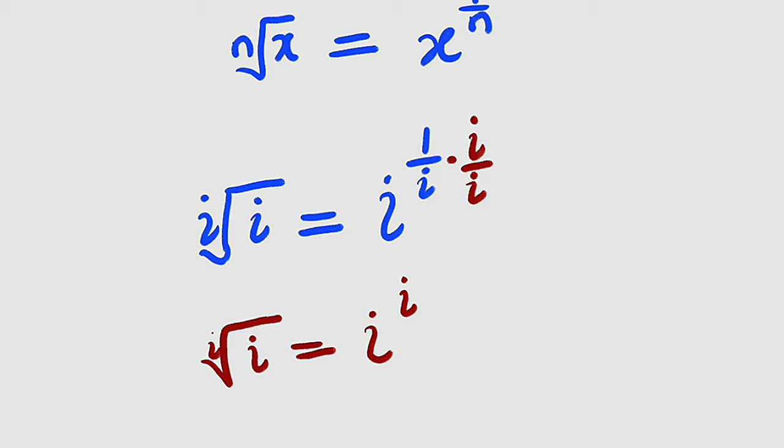And on the bottom, we have i times i, which is i squared. But remember that i squared equals negative 1. So dividing by negative 1 is the same thing as negative i.